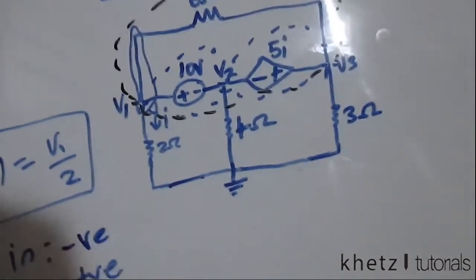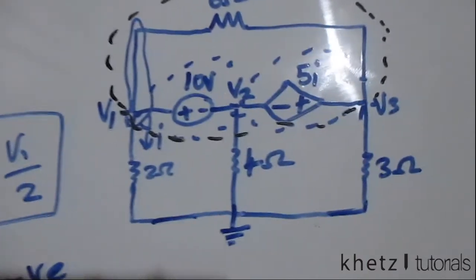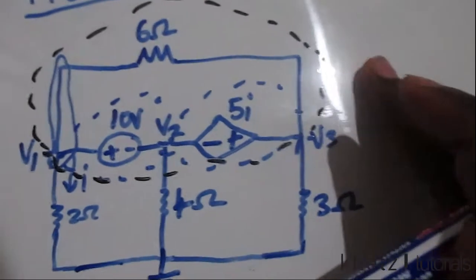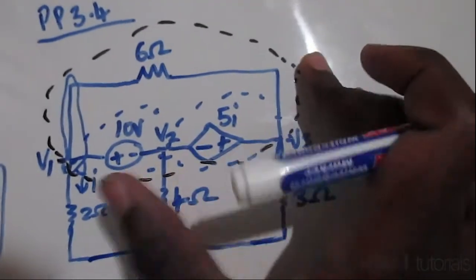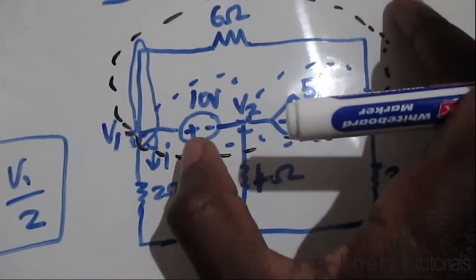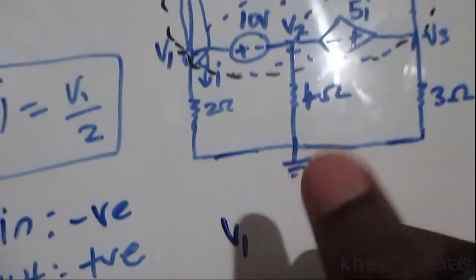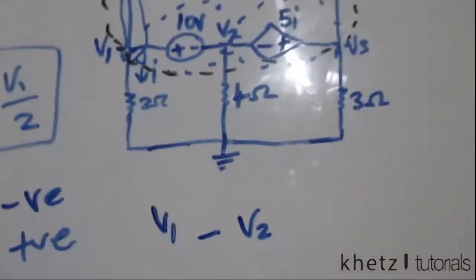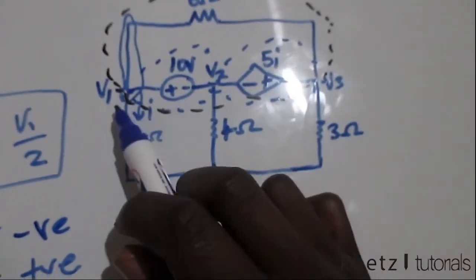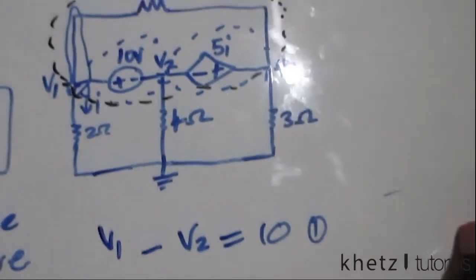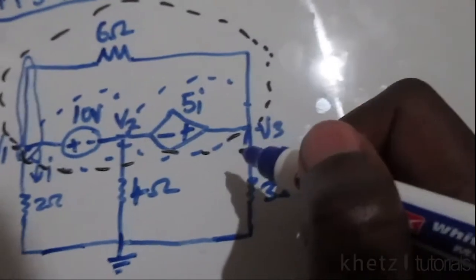Now let's look inside the super nodes. Whenever we form an equation associated with a voltage source, we go from the positive terminal to the negative terminal. For this first voltage source, starting at the positive terminal we have V1 minus V2, and the voltage between those two points equals 10. That is equation one.